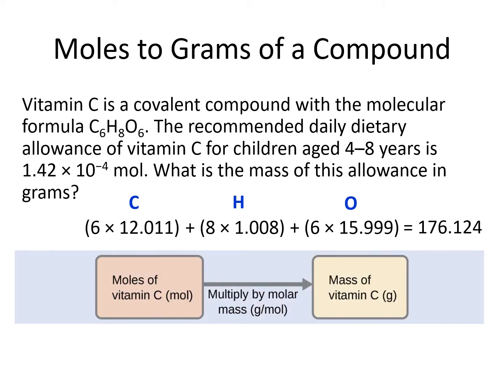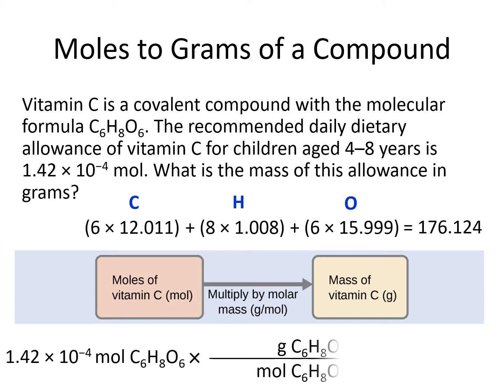Then we would use the molar mass as a conversion factor to go from moles to grams. We start with the number given in the problem, 1.42 times 10 to the minus 4 moles of vitamin C. We write a conversion factor with moles on the bottom to cancel out with moles in our starting number, and grams on the top since we are trying to solve for grams. We fill in our calculated molar mass next to grams, so it goes in the numerator this time. We do 1.42 times 10 to the minus 4 times 175.124, which gives us 0.0250 grams of vitamin C.